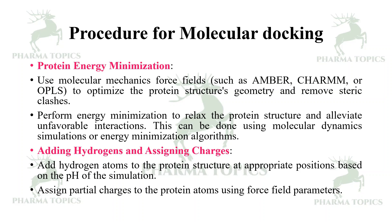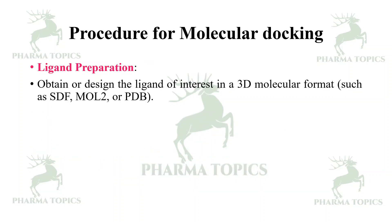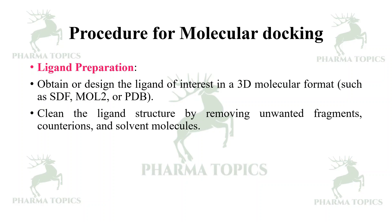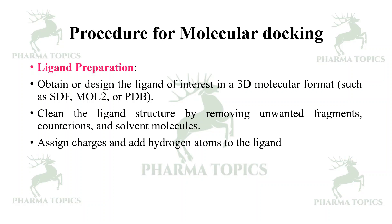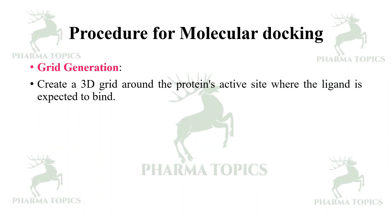Assign partial charges to the protein atoms using force field parameters based on the pH of the simulation. For ligand preparation, obtain or design the ligand of interest in a 3D molecular format such as SDF, MOL2, or PDB formats. Clean the ligand structure by removing unwanted fragments, counter ions, and solvent molecules, then assign charges and add hydrogen atoms to the ligand.